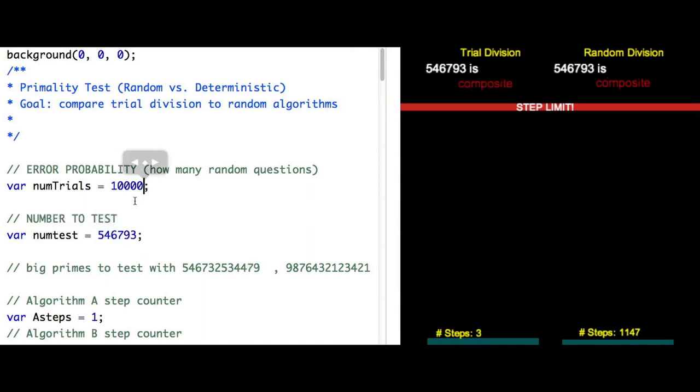But with huge input size, I need thousands of random tests for this to be accurate. So we haven't actually improved the number of steps needed. Our trial division method still seems better.